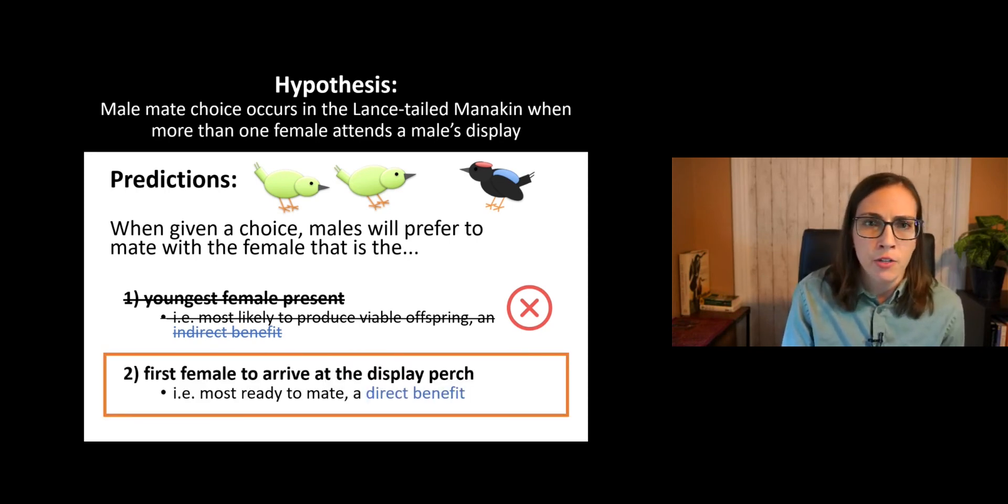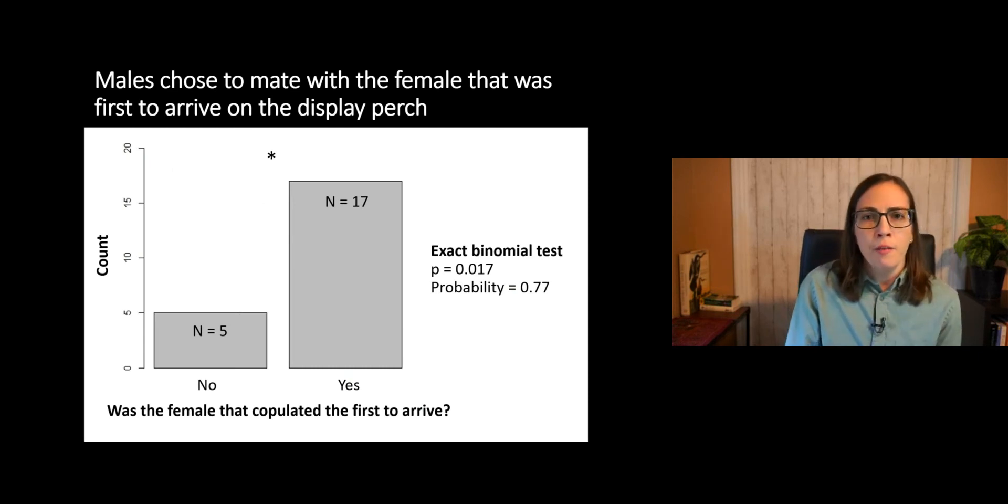So now moving on to our second prediction, we found that males actually did choose to mate with the female that was the first to arrive on the display perch. So here we have whether the female that copulated was the first to arrive on the x-axis, and then just a count of how many displays fit each criteria on the y. So from our exact binomial test, we found that there was a 77% likelihood that males chose to mate with the first female to arrive at the display perch, which may be the female that is the most ready to mate.